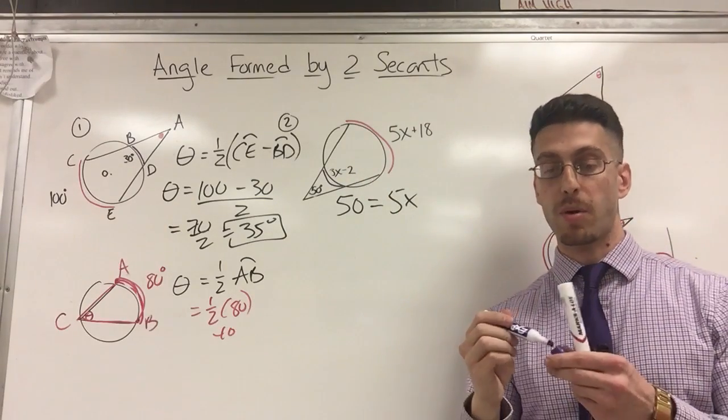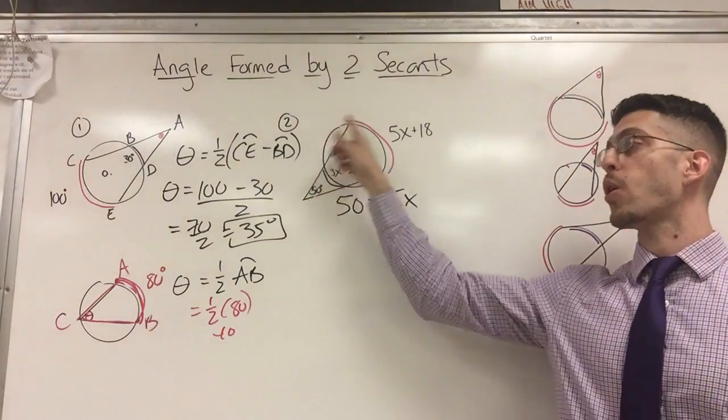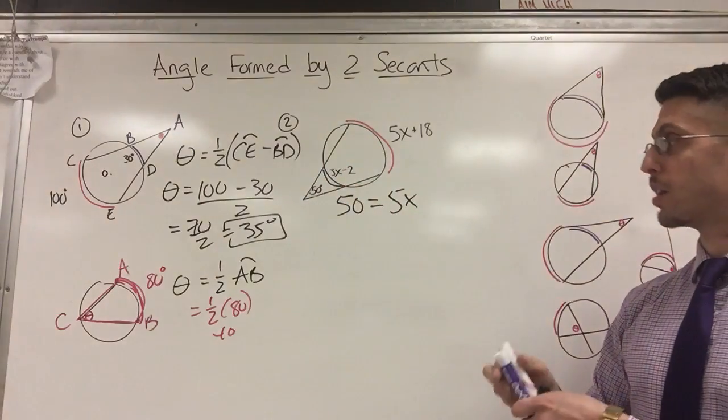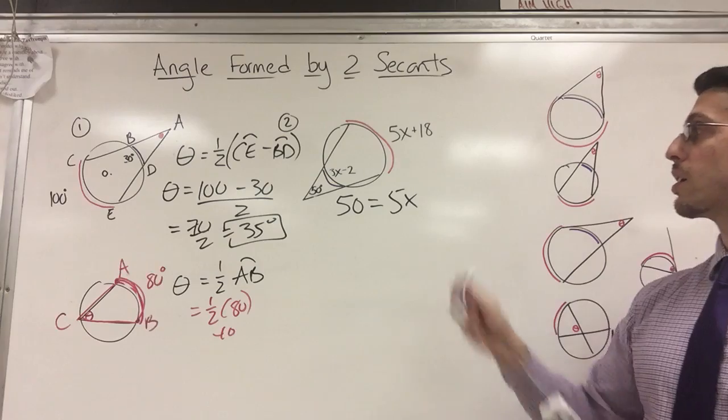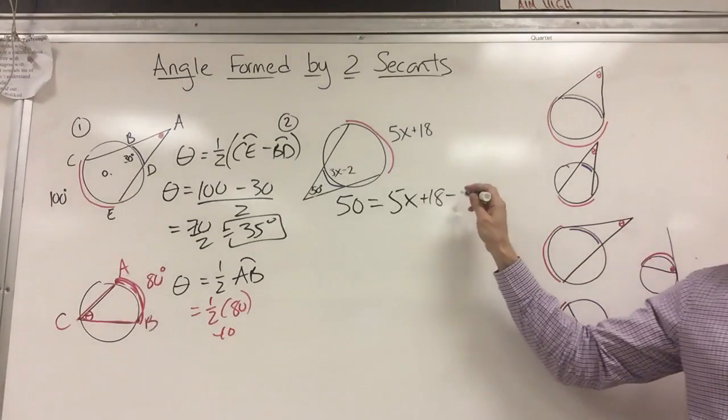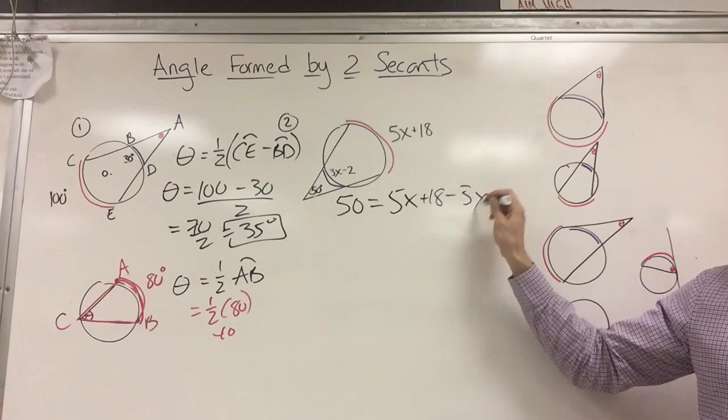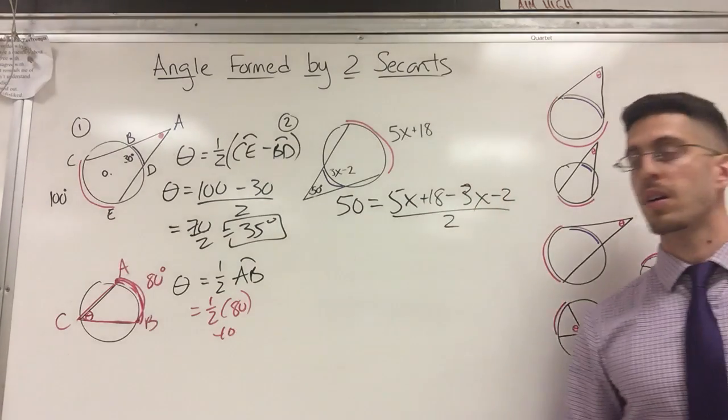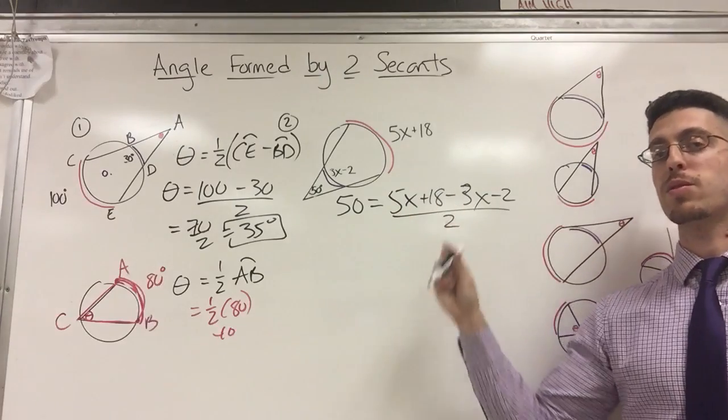That's pretty clear in this diagram. Sometimes they make it a little messy on purpose, where you have to know that the whole thing is 360 and maybe you have to find a missing arc first. But here I'm given. So big minus little, 3x minus 2, all divided by two. The angle is equal to big minus little divided by two.